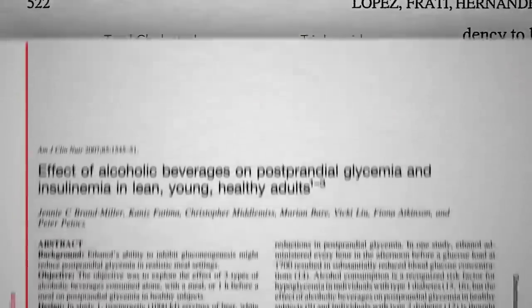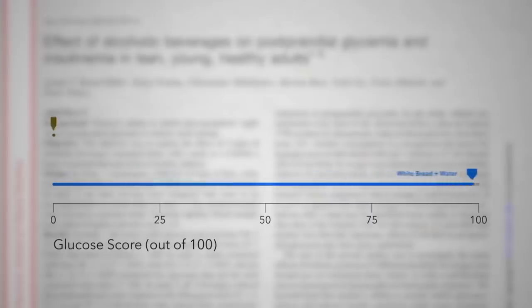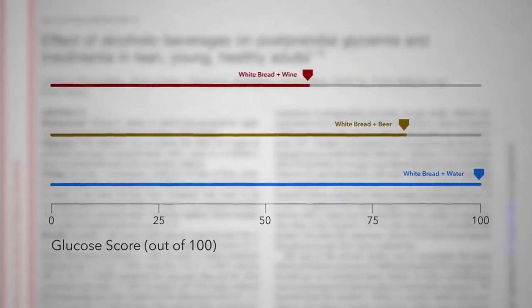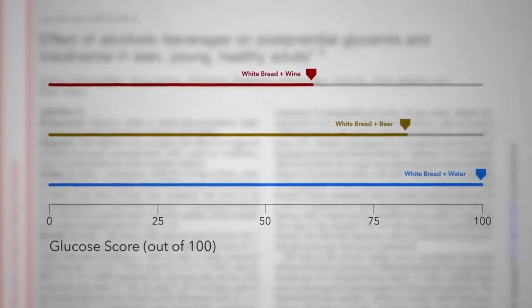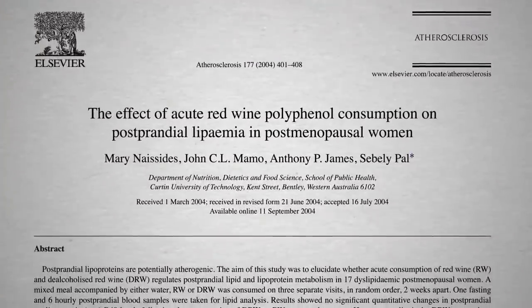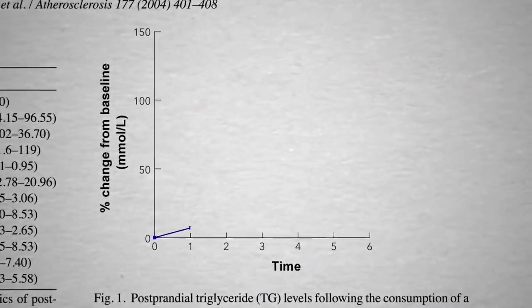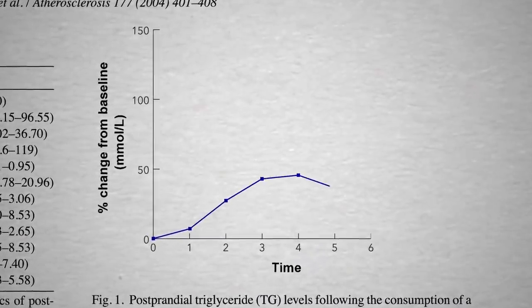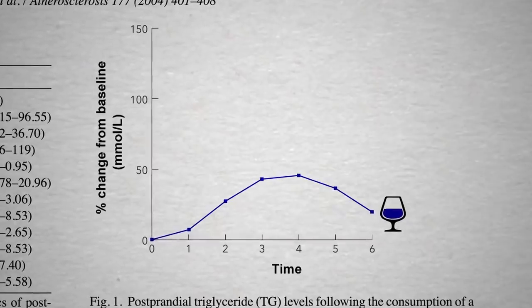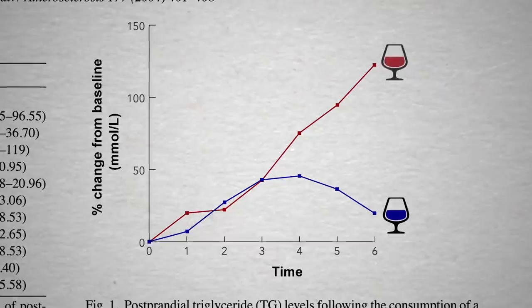If eating berries with a meal decreases inflammation, what about drinking berries? Sipping wine with your white bread significantly blunts the blood sugar spike from the bread, but the alcohol increases the fat in the blood by about the same amount. If you eat some cheese and crackers, this is the triglycerides bump you get. If you sip some wine with the same snack, they shoot through the roof.